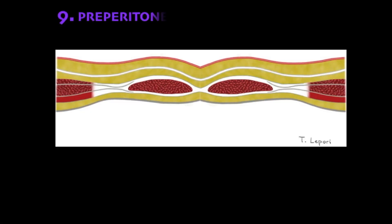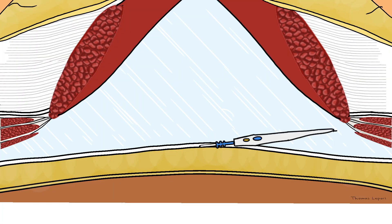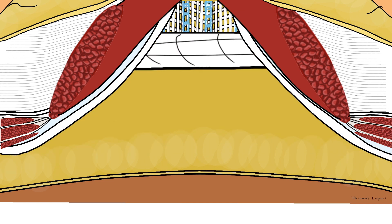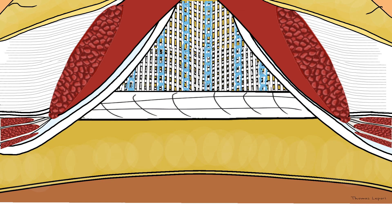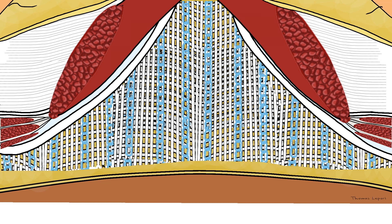The preperitoneal space is defined anteriorly by the transversalis fascia and posteriorly by the peritoneum. This plane is the gold standard in umbilical hernia repair, TEP, and TAPP laparoscopic groin hernia repair.